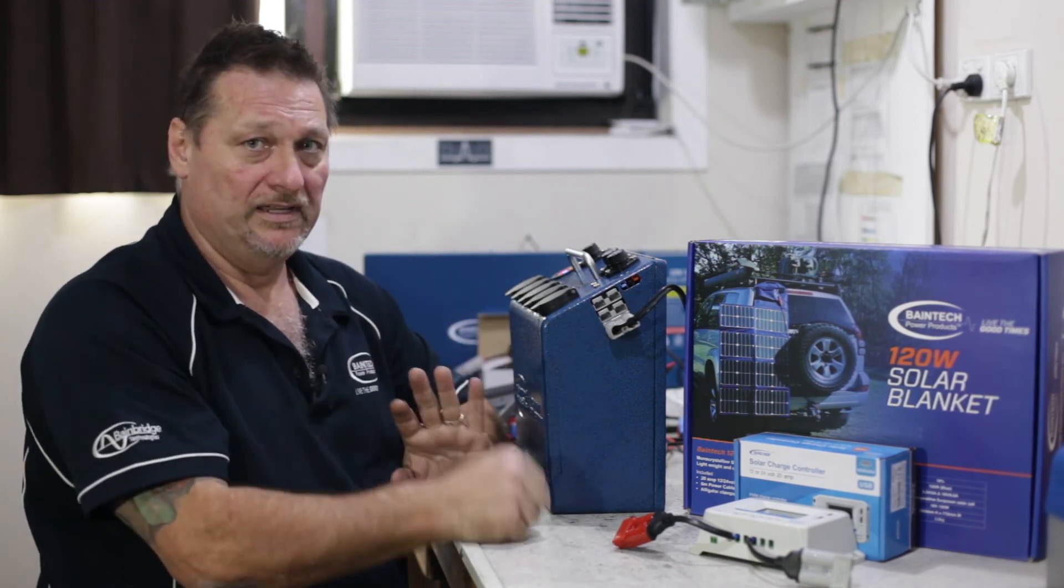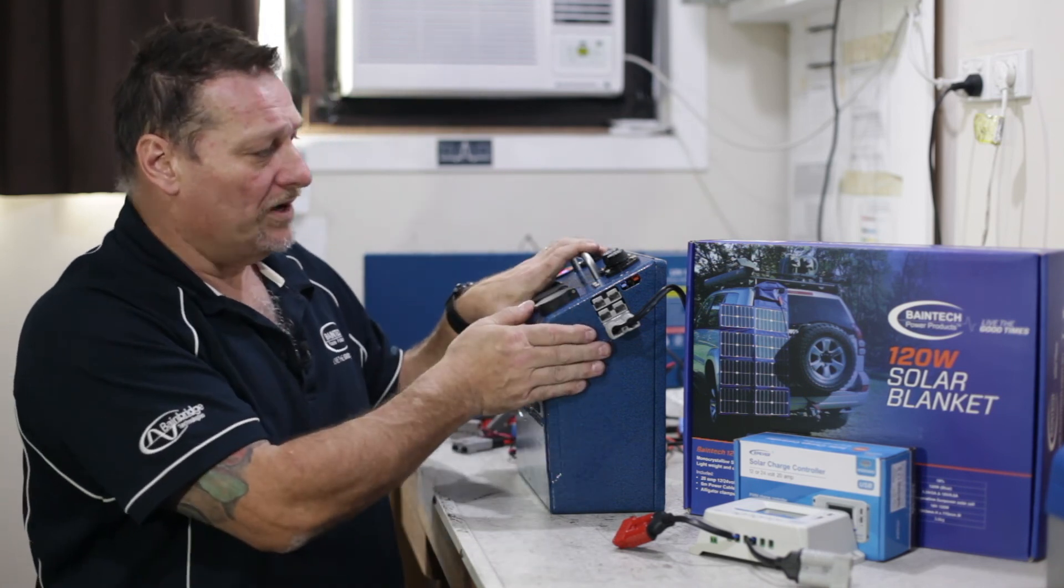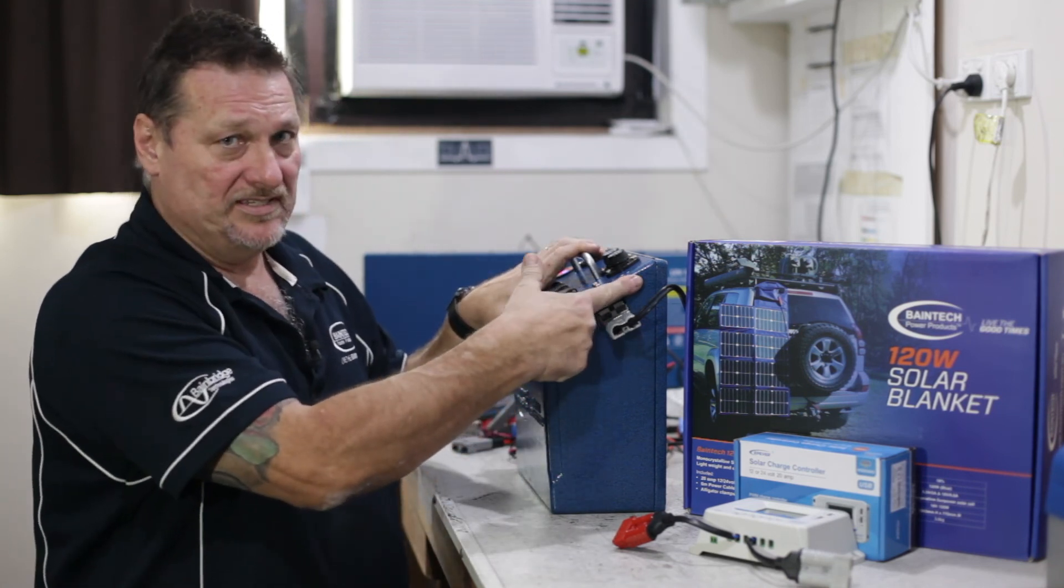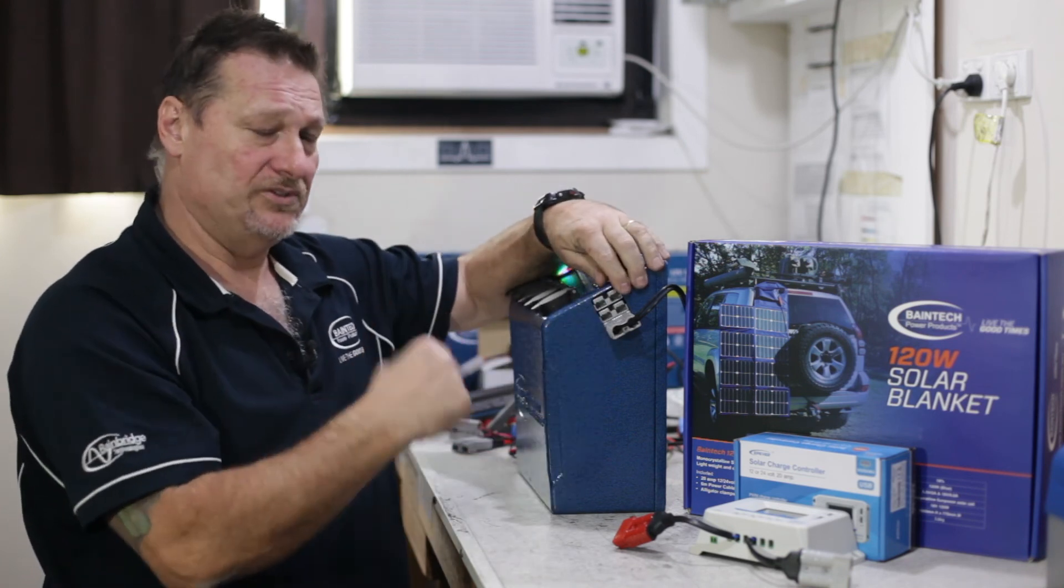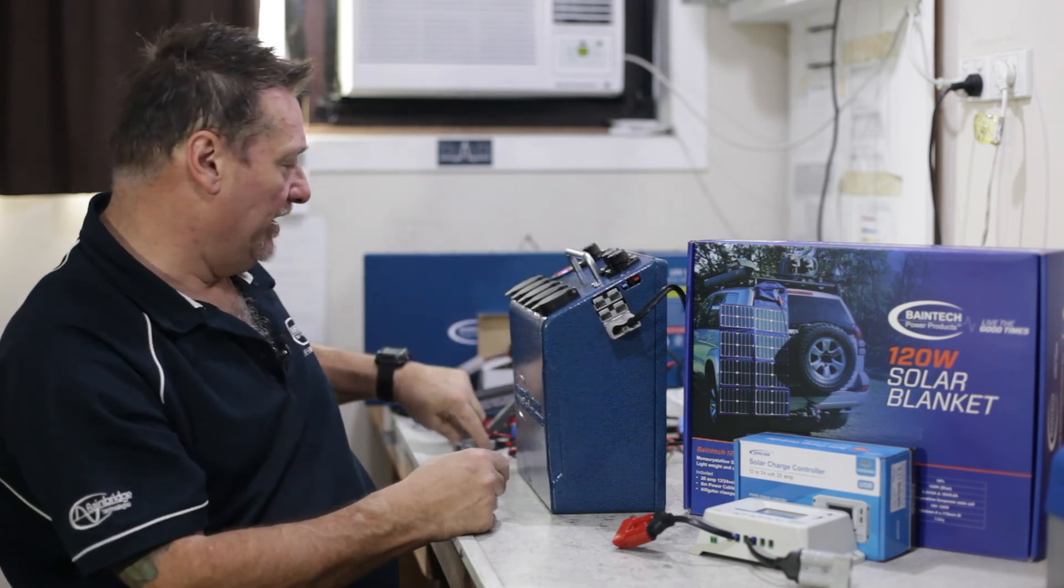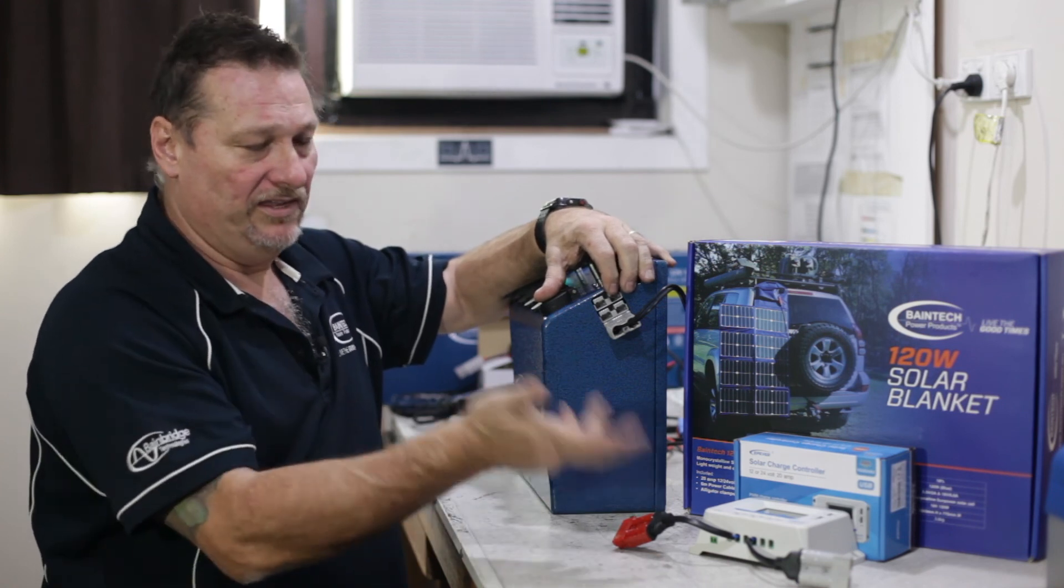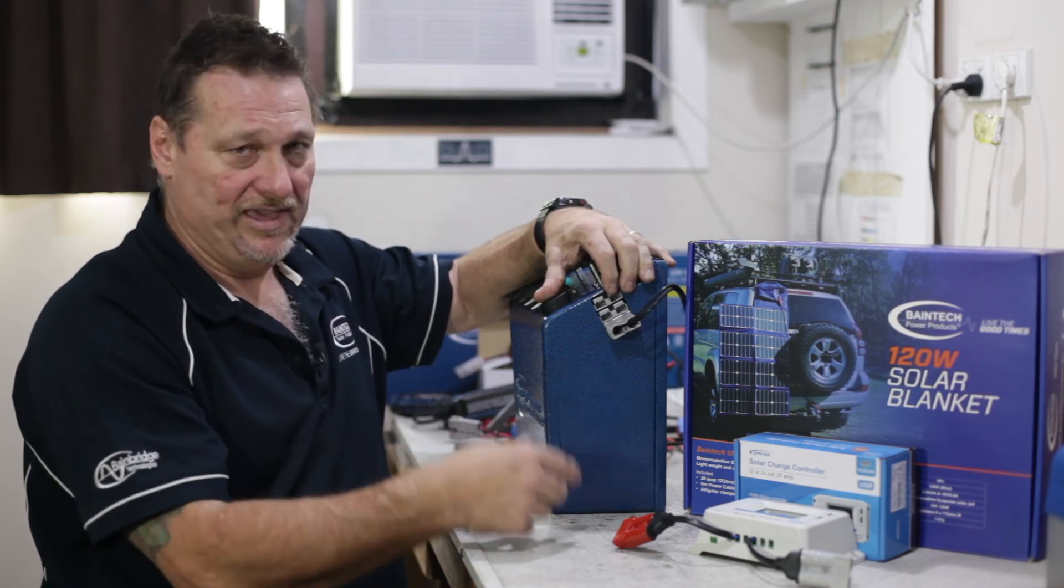If you did buy the one that doesn't have the inbuilt DC to DC you can still use the other two options for charging, obviously plugging in via the AC into one of the Anderson plugs and or whilst you're out on the road or at your campsite you can plug the solar in via the solar regulator.